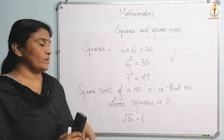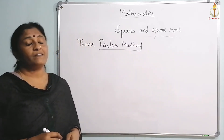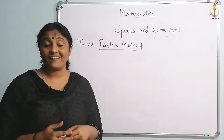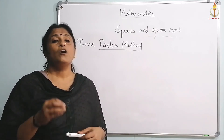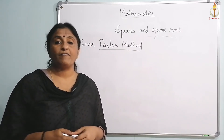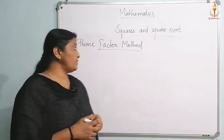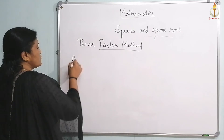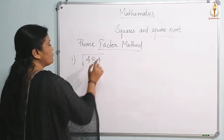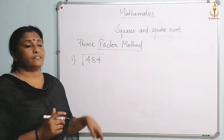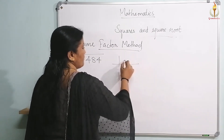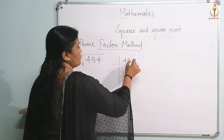Moving on to the prime factor method: you have to use the prime factorization of certain numbers to find the square root. The first problem is to find the square root of 484. You need to do the prime factorization of 484.